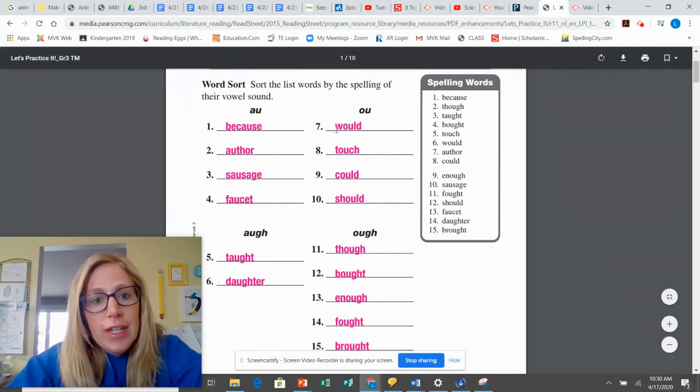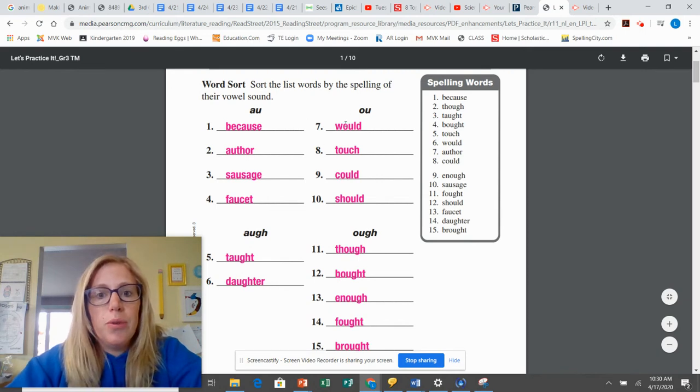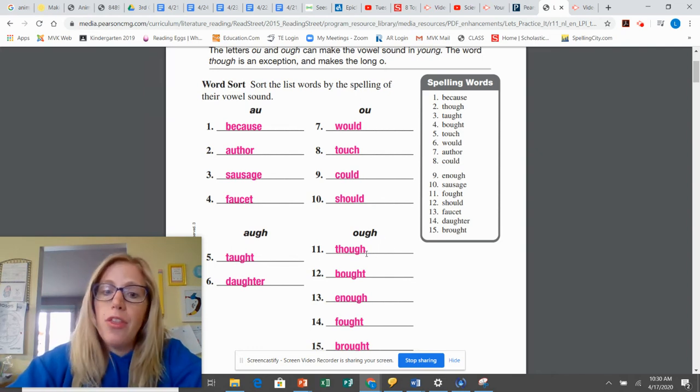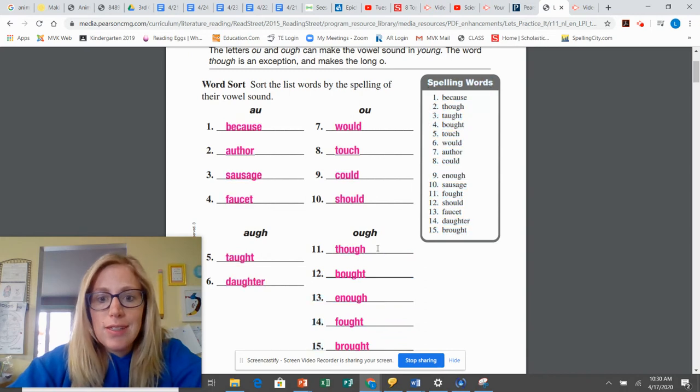Then we have OU: would, touch, could, should. So all of those are using OU to make the uh sound. Then OUGH. Okay, though, that's the one exception. That's a long O.